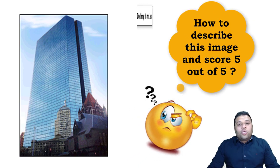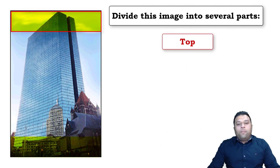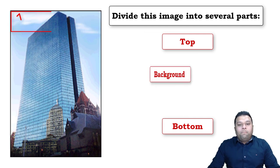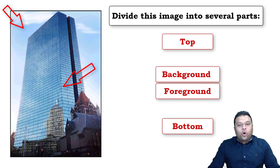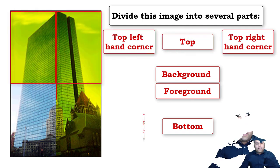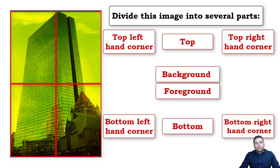To score five out of five, you have to cover maximum keywords, their relationships, and the different aspects of the image. We divide this image into several parts: the top of the picture, the bottom of the picture, the background, the foreground, the top-right corner, the top-left corner, the bottom-right corner, and the bottom-left corner. That's how we divide the image.